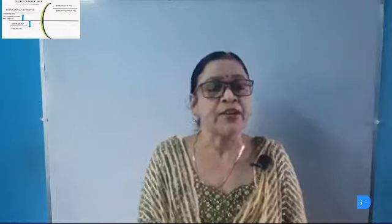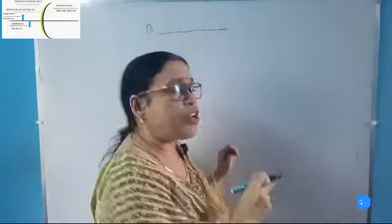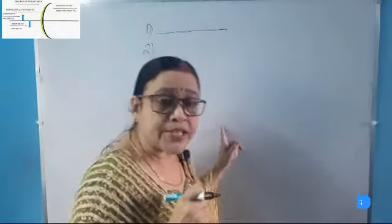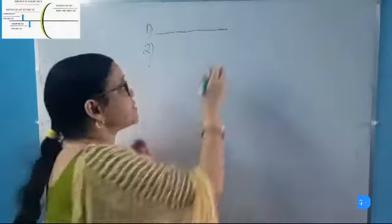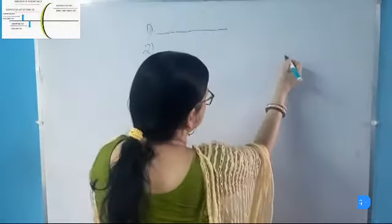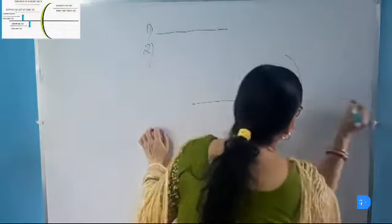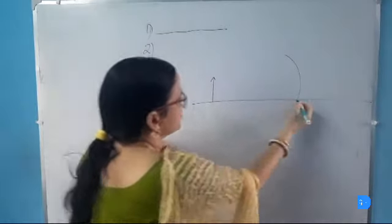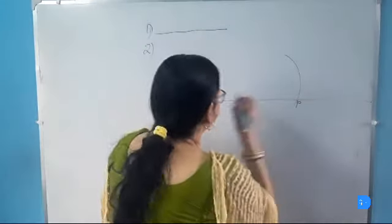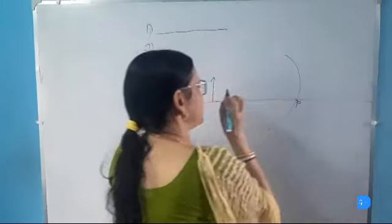According to this new Cartesian sign convention, all the distances are measured from the pole as origin. Suppose this is the spherical mirror and this is the principal axis. This is the pole. All the distances are measured from the pole as origin.